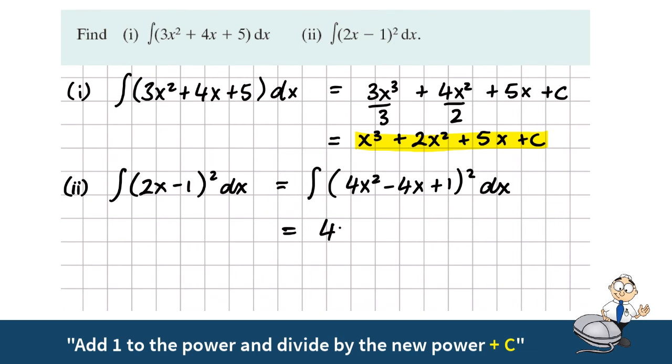And now we're going to integrate each of these three terms individually, increasing the power by 1, dividing by the new power. And 1 goes to 1x. And don't forget to add c at the end.